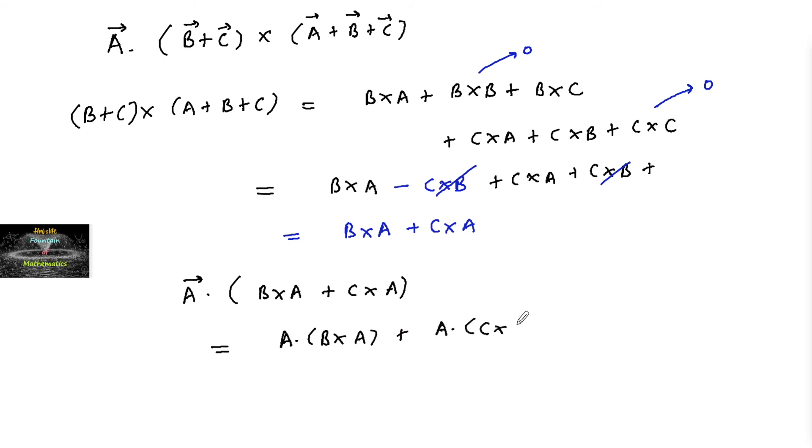So this is like a scalar triple product: [A B A] and this is [A C A]. In which two vectors are equal, so they are coplanar.